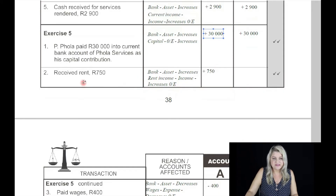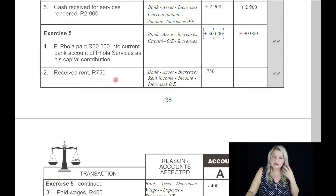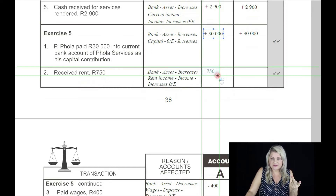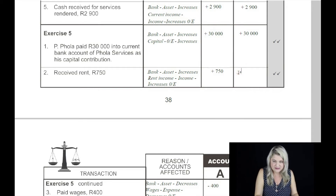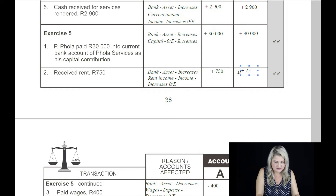On the second: received 750 Rand for rent. Bank is the one account, which increases by 750 Rand. The other account is rent income, which is an income, and an income always positively affects the owner's equity account.